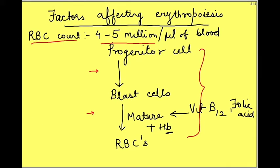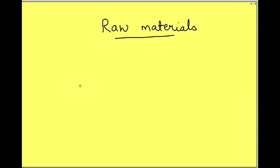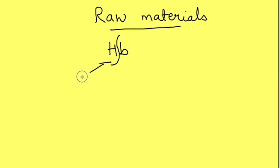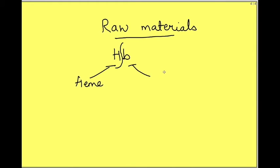Some raw materials are required for synthesis of hemoglobin. So what are these raw materials? Now hemoglobin is composed of two parts, heme and a protein part known as globin.